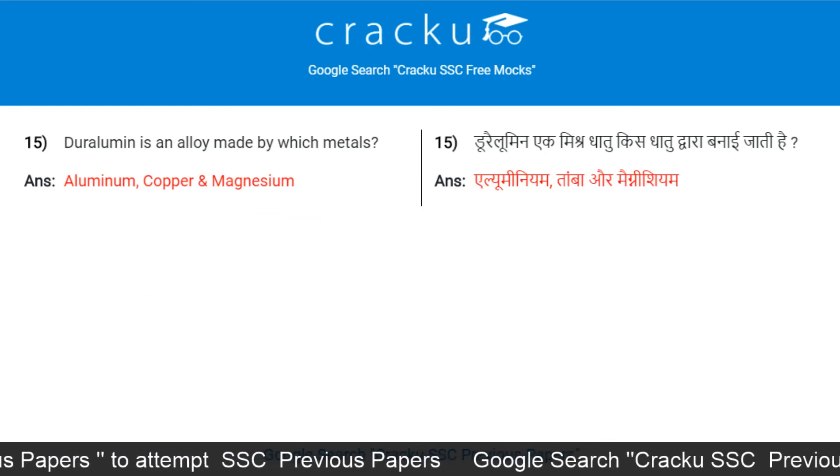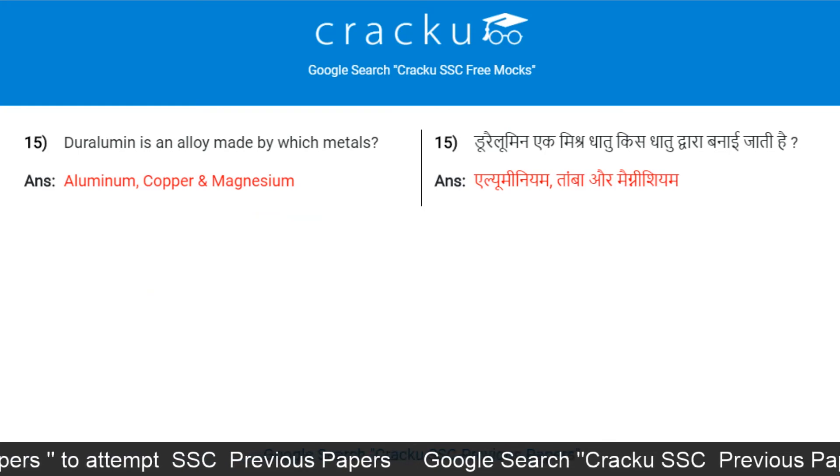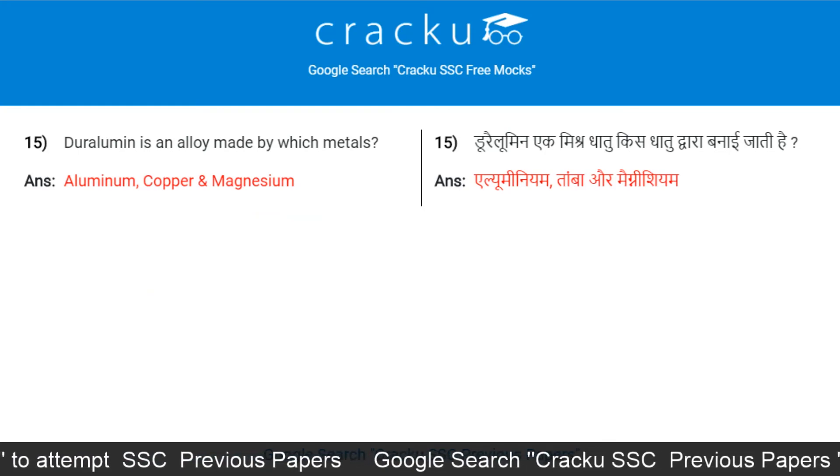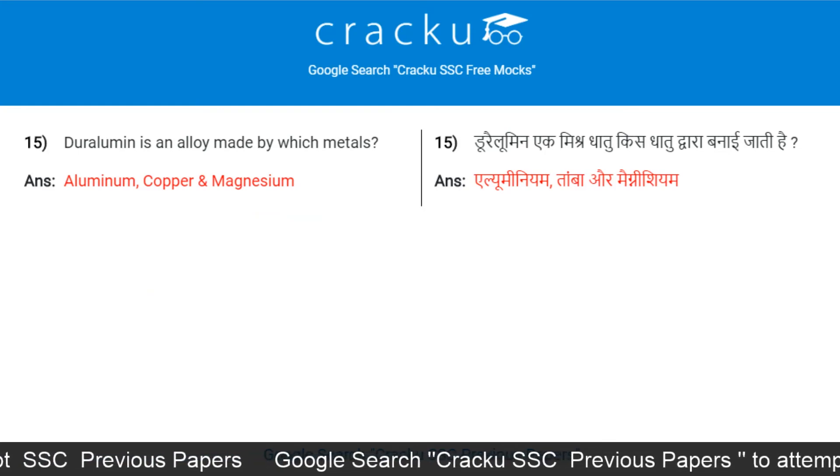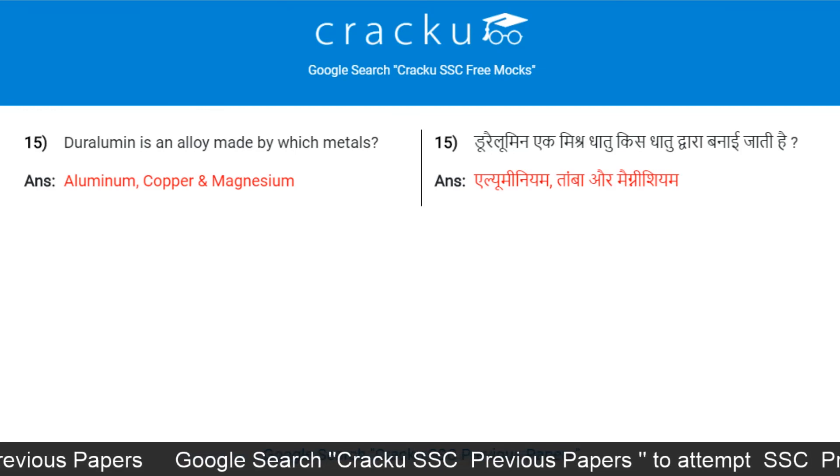Duralumin is an alloy made by which metals? Aluminium, copper, and magnesium.